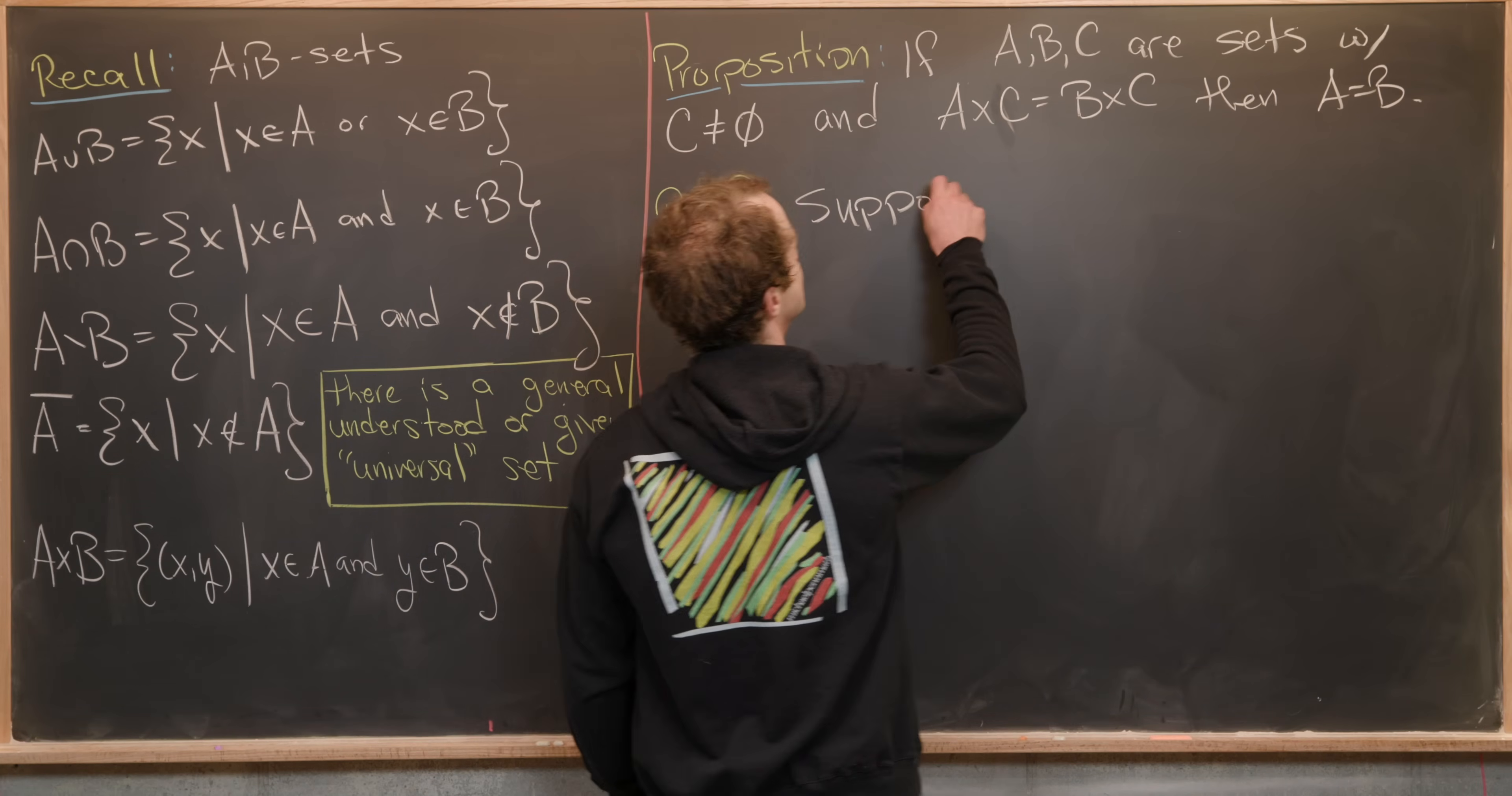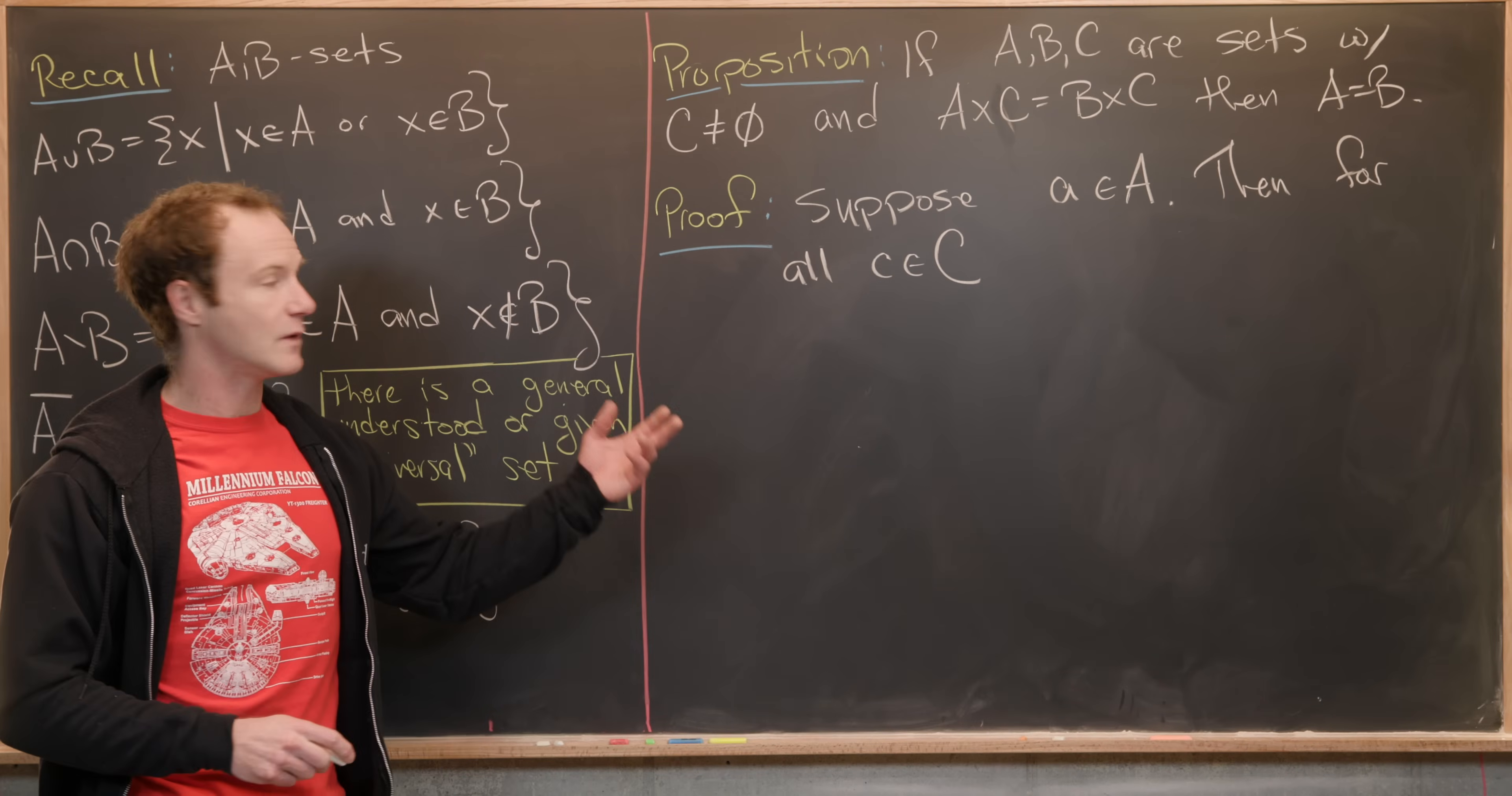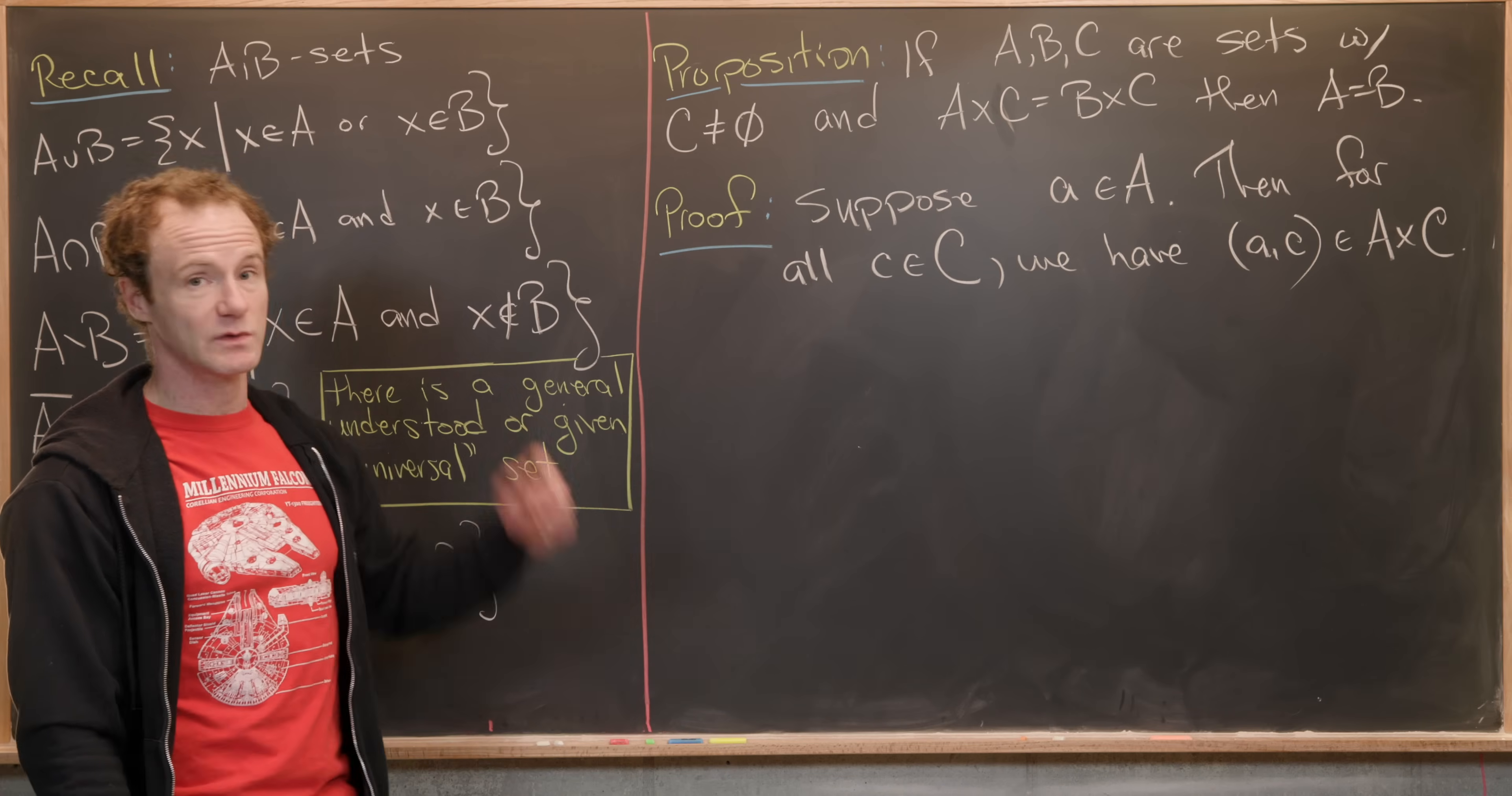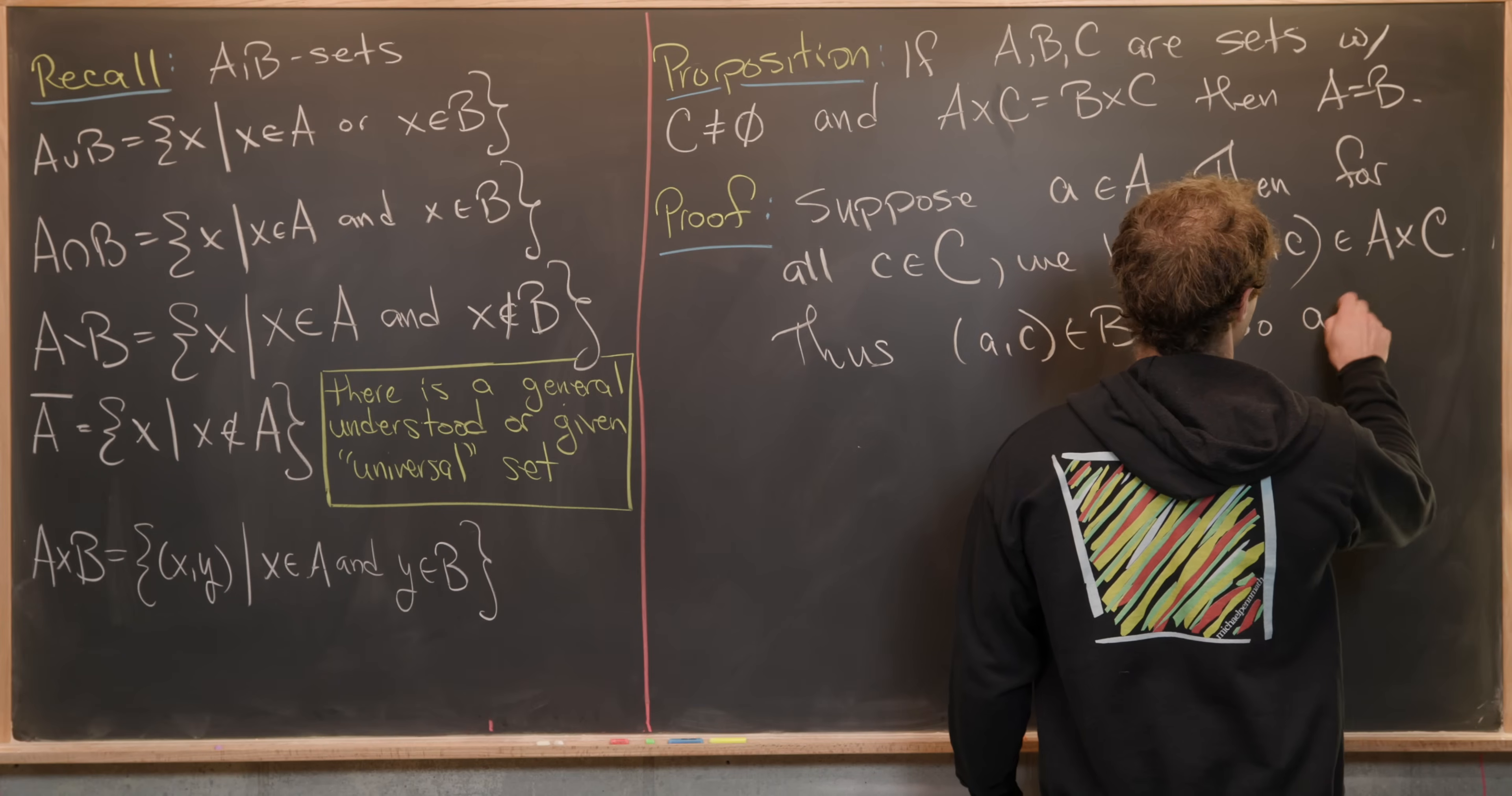So let's suppose that we have an element a from the set A, and we want to show that this element little a is also in the set B. Then we have the ordered pair (a,c) is in the set A cross C. But we know that A cross C is equal to B cross C, so thus (a,c) is an element from B cross C. But then from this sentence right here, it quickly follows that a is an element from B.